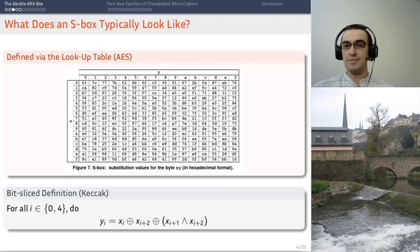You can also use a bit slice representation, where each output bit is effectively a boolean function of the input bits. So here we have the s-box of Keccak. It's a five-bit permutation in this case, and it has this nice representation.